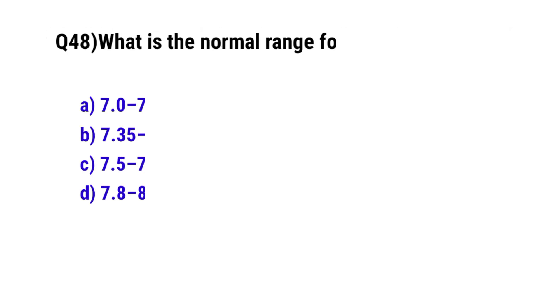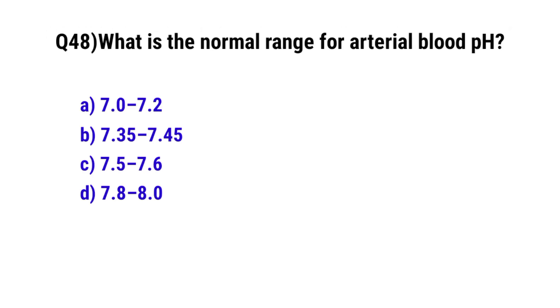Question number forty-eight: What is the normal range for arterial blood pH. The correct option is B, 7.35 to 7.45.